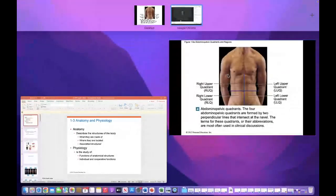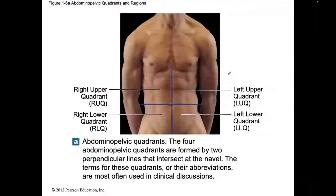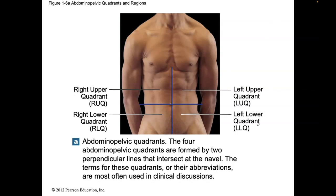Hi everyone, it's Dr. Lindner. We are going to take a look at the next topic, which involves quadrants and regions. There's reference terminology for everything — we learned about medial and lateral, superior and inferior, caudal and cephalic, proximal and distal. Now we're going to look at terminology specific to the abdominal region.